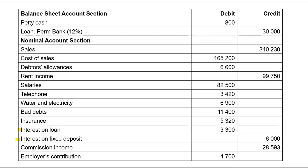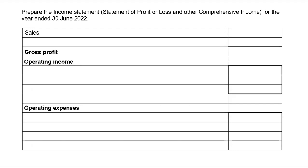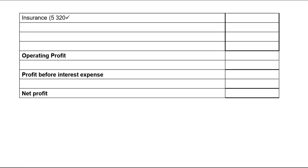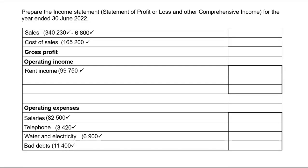I will take everything under the nominal accounts section and put it in my income statement — starting with sales and cost of sales, then subtracting debtors allowances from sales. I also have rent income, salaries and wages, telephone, water and electricity, bad debts, insurance, interest expense, interest income, employer's contribution, and commission income. Commission income will be recorded under other operating income.